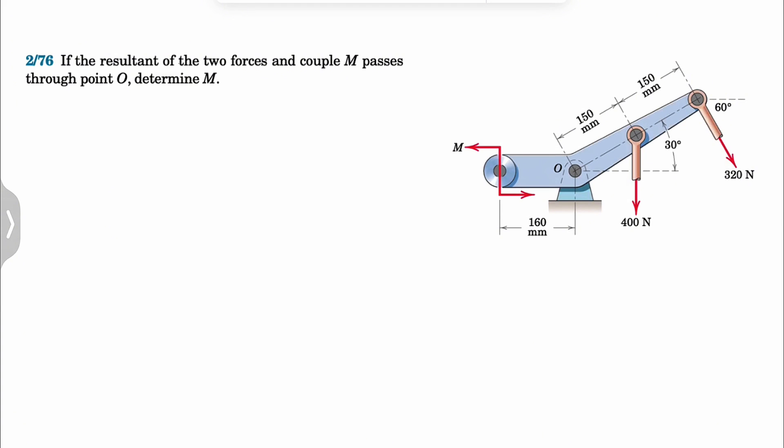We have this question saying the resultant of the two forces and the couple passes through point O. What this means is we can replace this couple and these two forces with one single force where the line of action of that force passes through point O. So it can be replaced by a single force at point O.